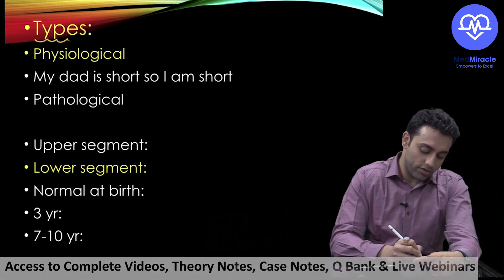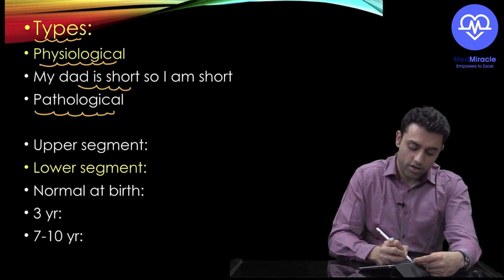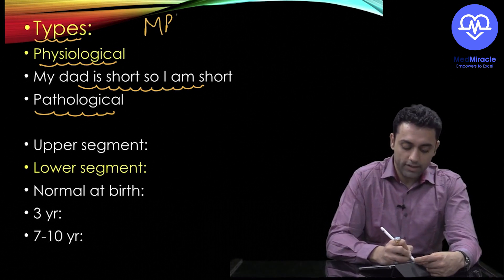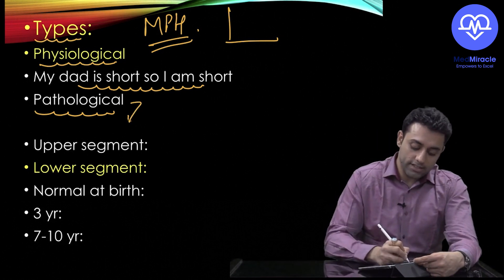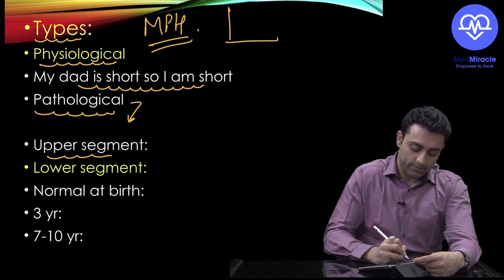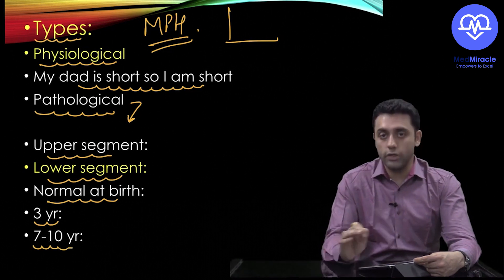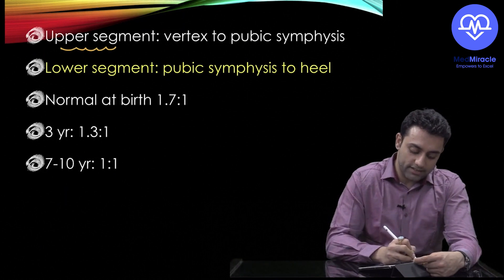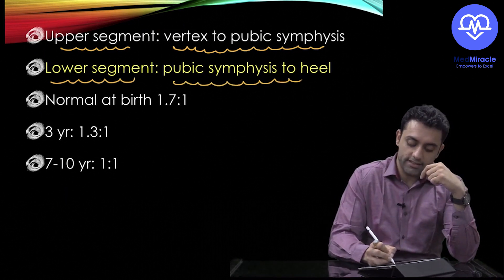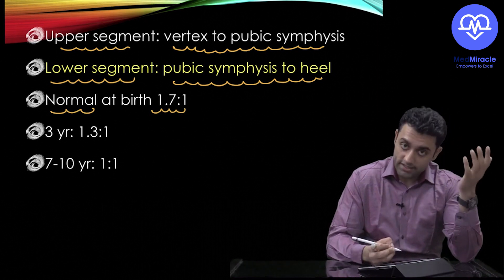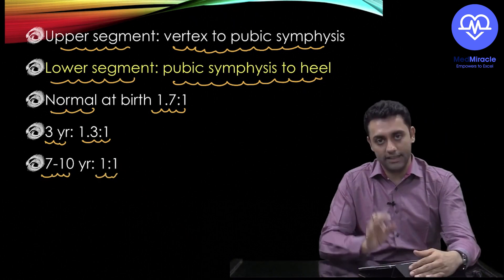In proportionate short stature, the upper segment to lower segment ratio is normal, but the patient is still short. The upper segment is measured from vertex to pubic symphysis, and the lower segment from pubic symphysis to the heel. Normal US:LS ratio is 1.7:1 at birth, 1.3:1 at 3 years, and 1:1 at 7 years.